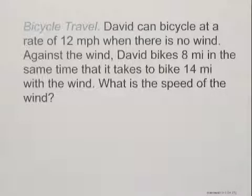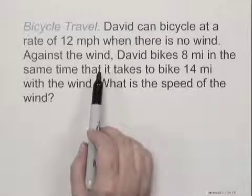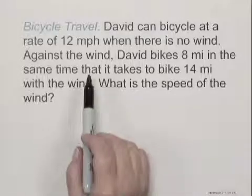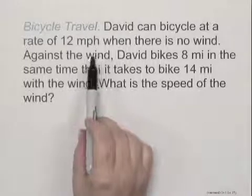First of all, we familiarize ourselves with the situation, and the first thing that I would do is to think about what it means to bicycle against the wind and with the wind. Against the wind, you're fighting the wind, so you're going to slow down in your rate. You'll have to take the amount of the fastest you usually go, 12 miles an hour, and subtract the wind speed.